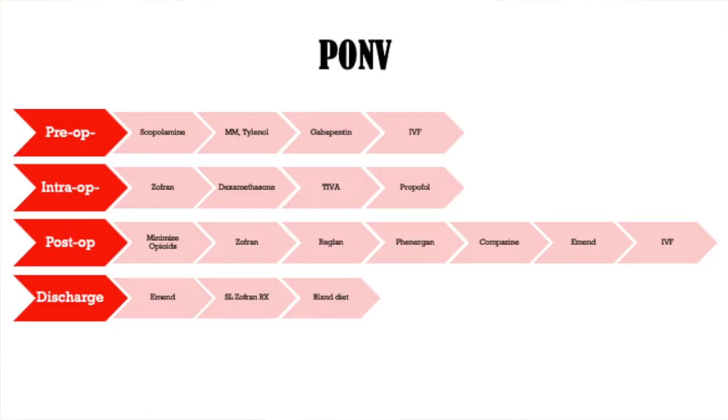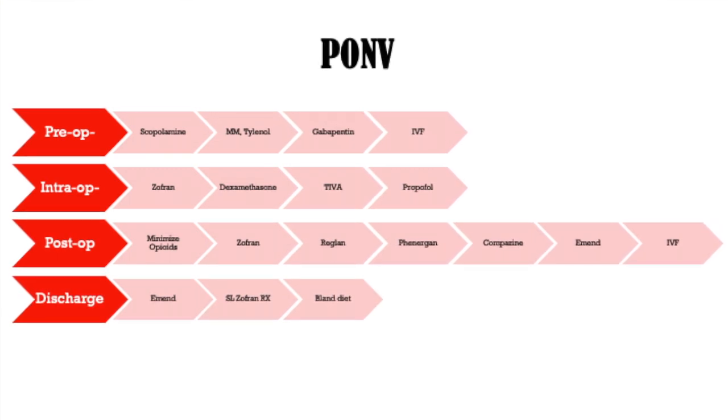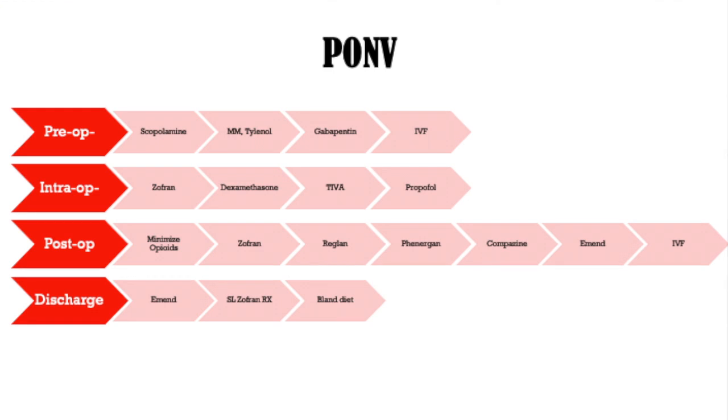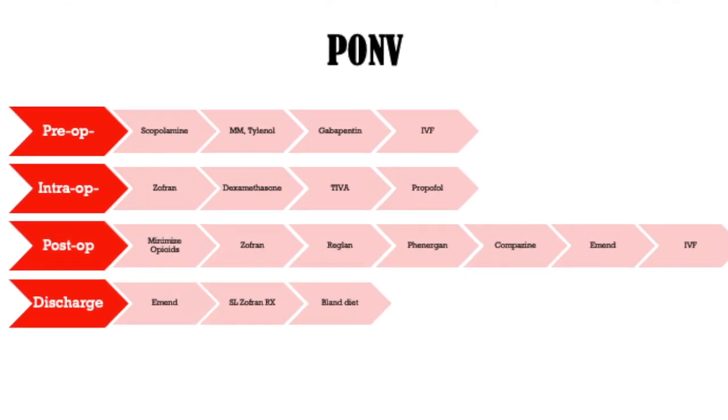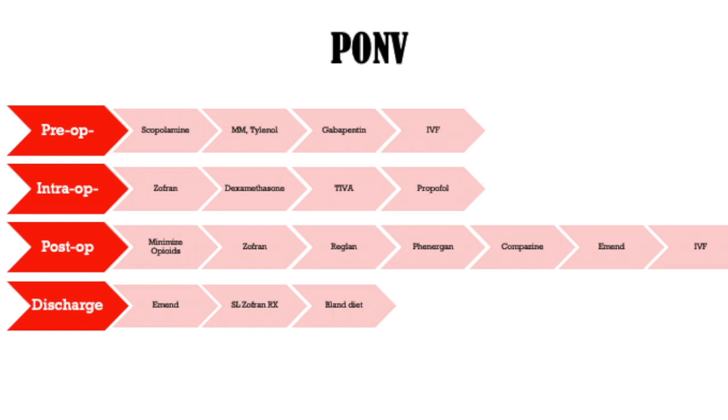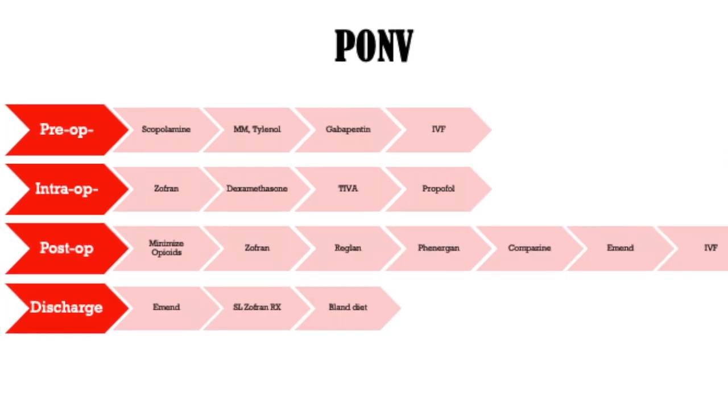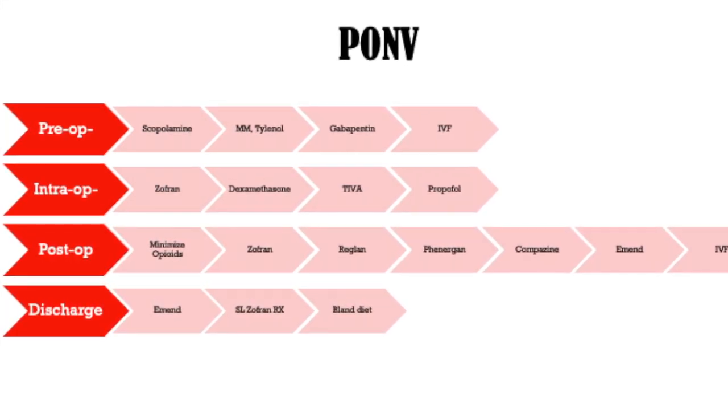Stay with your patient if vomiting appears imminent. There are many interventions possible at different phases of care. In the pre-op setting, patients may apply a scopolamine patch the night before surgery. In pre-op, multimodal interventions include a gram of Tylenol PO, gabapentin, IV fluids, and rehydration. Intraoperatively, agents include Zofran, dexamethasone, Teva, and Propofol, while minimizing anesthetic gases and operative duration.